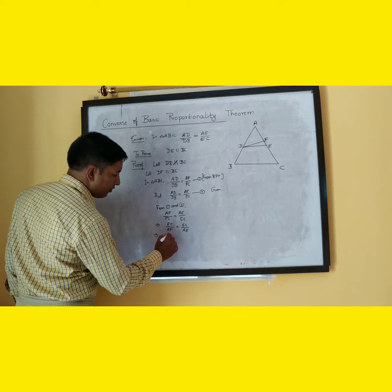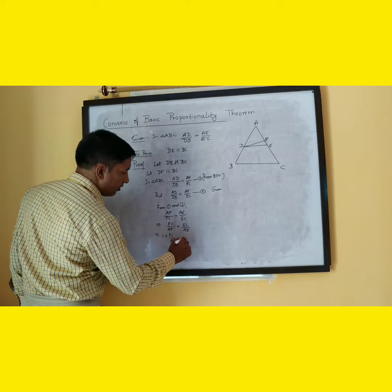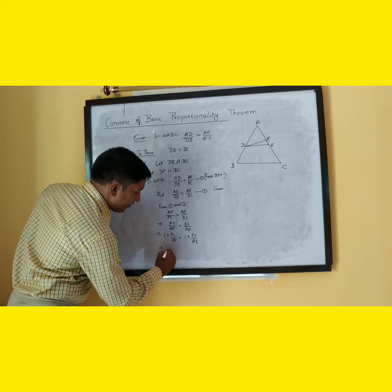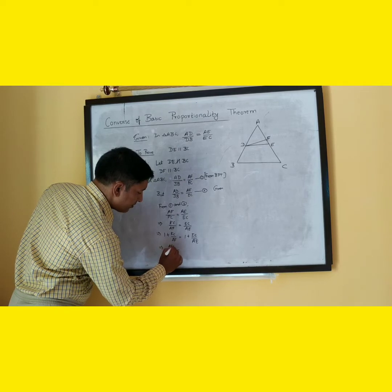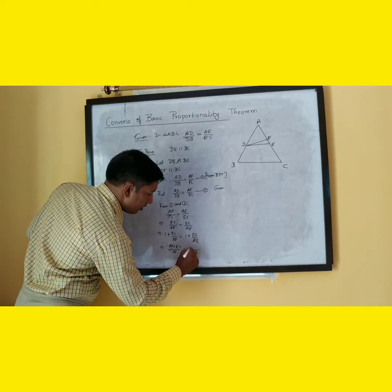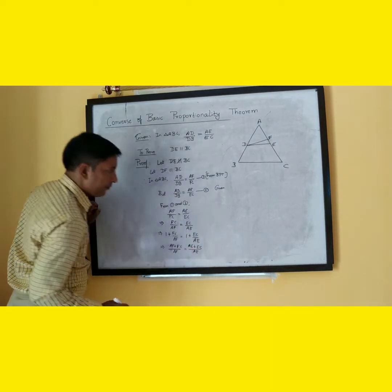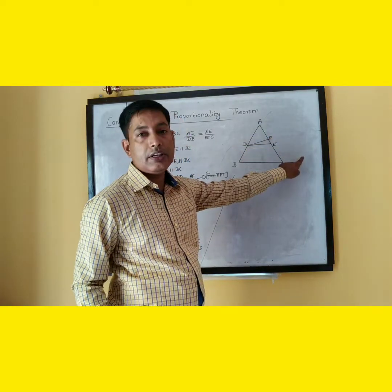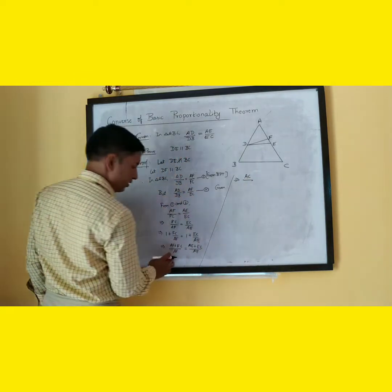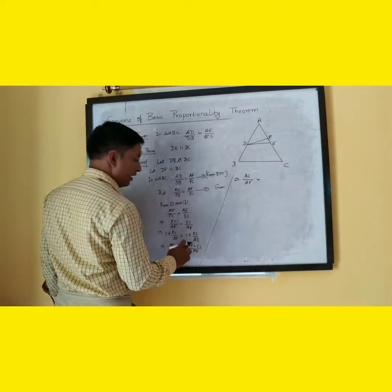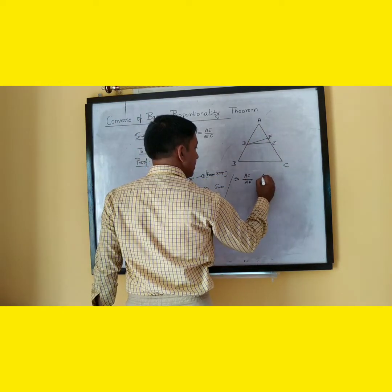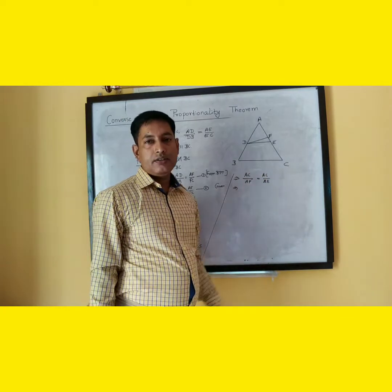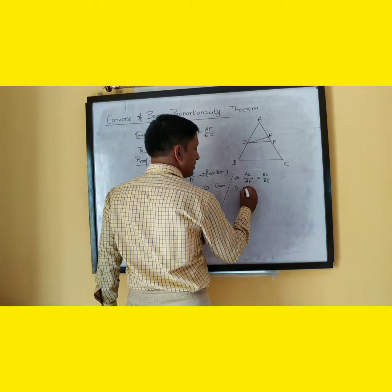From AF divided by FC equals AE divided by EC, we get FC divided by AF equals EC divided by AE. Adding 1 to both sides: 1 plus FC by AF equals 1 plus EC by AE, which gives us AF plus FC divided by AF equals AE plus EC divided by AE. Since AF plus FC equals AC, and AE plus EC also equals AC, we get AC divided by AF equals AC divided by AE. The AC cancels on both sides, giving us AF equals AE.